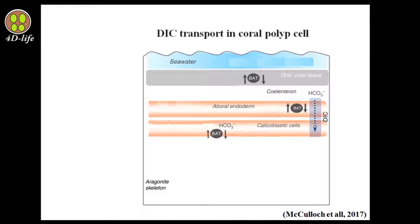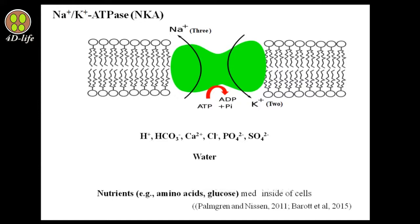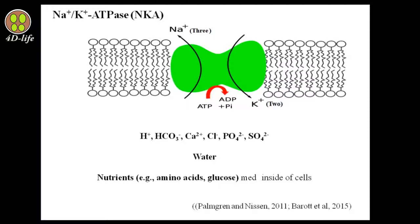Another important ion transporter in the coral epithelium is sodium-potassium ATPase, or NKA, which uses energy from ATP hydrolysis to export 3 sodium ions in exchange for the uptake of 2 potassium ions. Through NKA activity, in addition to sodium and potassium transport, secondary transport of other ions such as hydrogen, bicarbonate, chloride, phosphate, sulfate, water, and nutrients such as amino acids and glucose is also facilitated. However, despite the fundamental function of NKA in coral cells, there is still little information about its location or physiological role in coral.